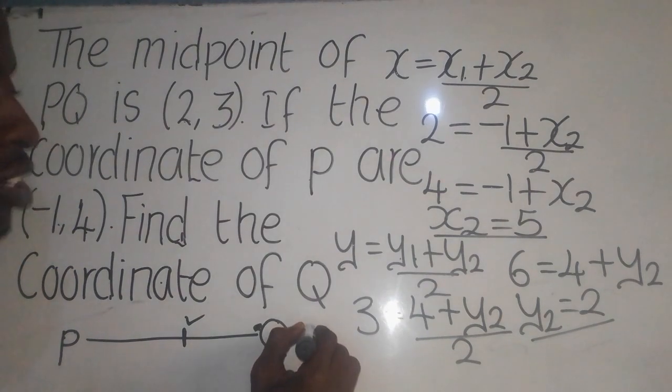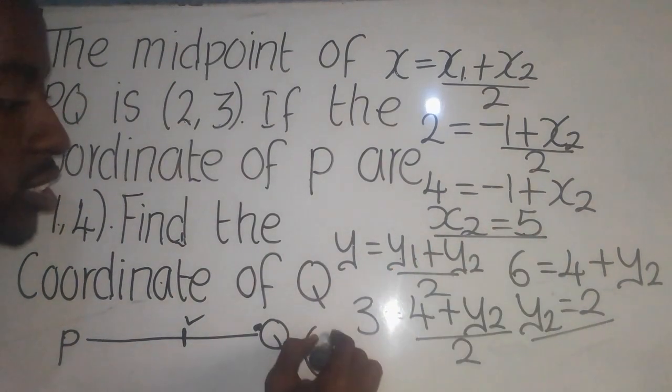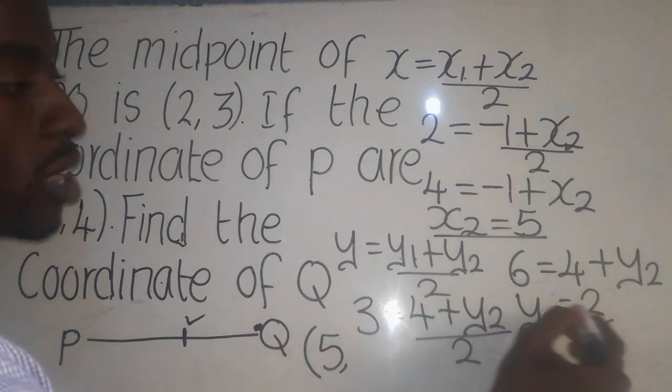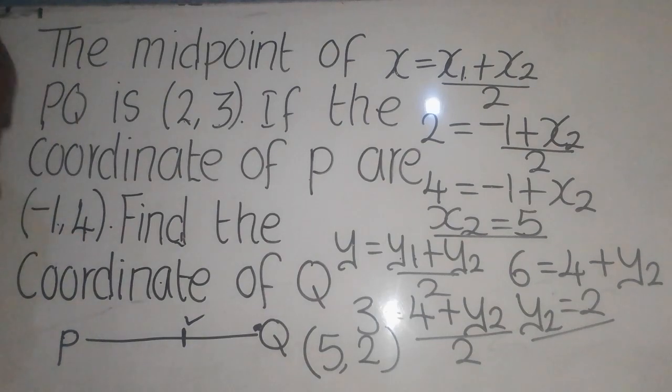So now the final answer should be like this. So you get the value for X, which is 5. The one for Y is 2. So this is the answer. See you later.